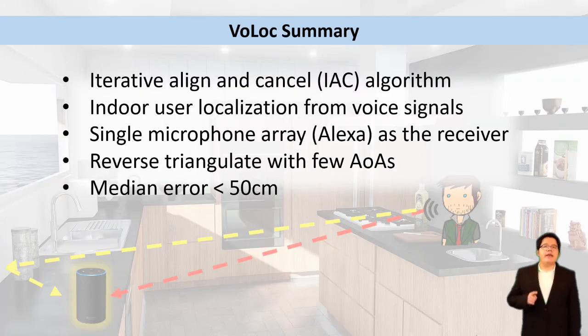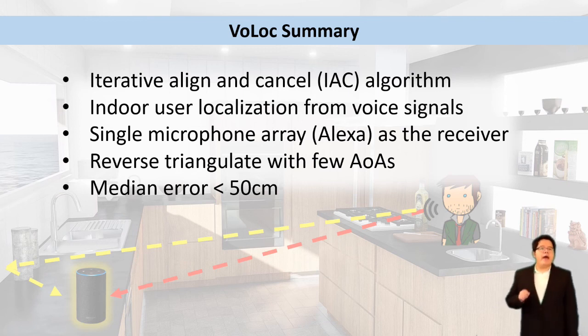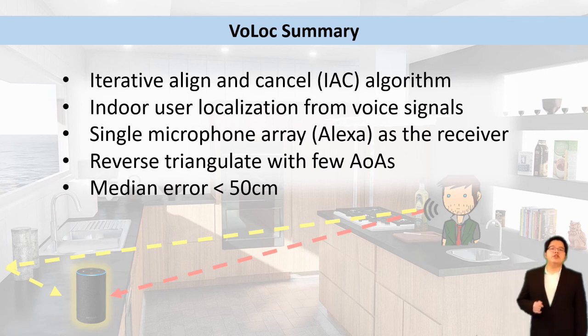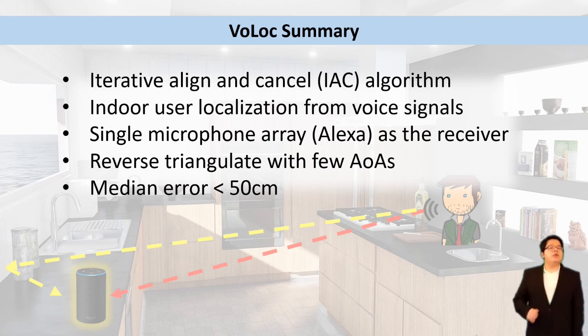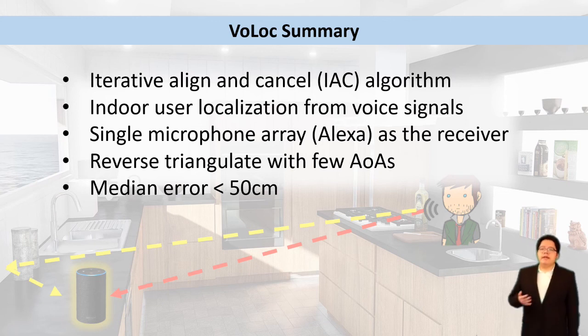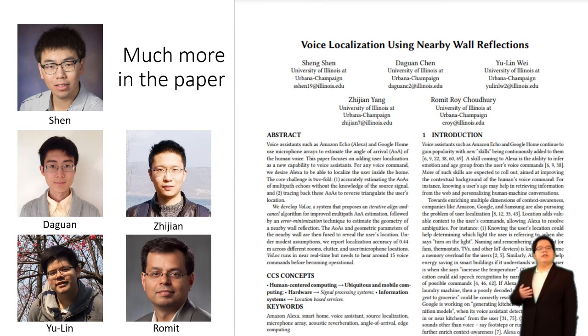To sum up, we propose an iterative align and cancel IAC algorithm to estimate the AOA of every echo. And also, we propose Volock, an indoor user localization system using voice signal as input. We need a microphone array like Alexa Echo as the receiver, and we use the direct paths and the reflective paths to do the reverse triangulation to locate the user. We can achieve a median error less than 50 cm. This concludes my talk, and for technical details and more results, please refer to our paper.